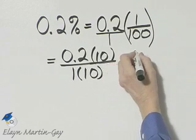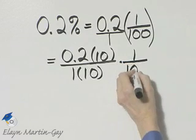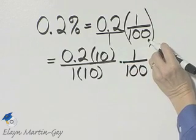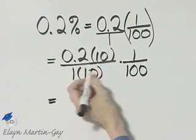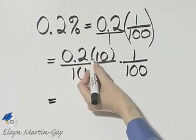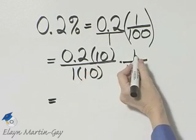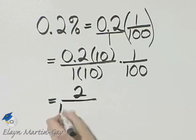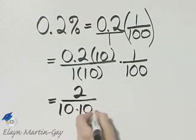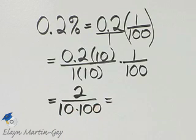Now we still multiply by 1 over 100 from here. So let's see what we have. We have two-tenths times 10, remember that has the effect of moving the decimal point one place to the right, times 1, well that's simply 2. In the denominator I have 10 times 100, and notice there is a common factor of 2 in the numerator and the denominator.